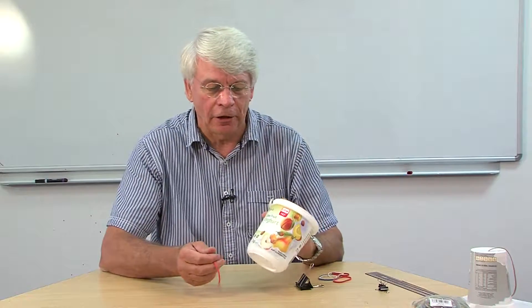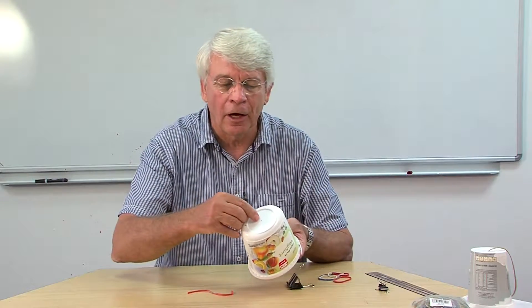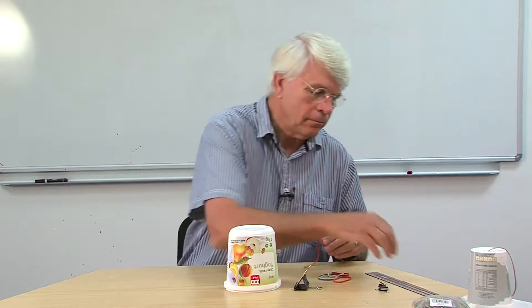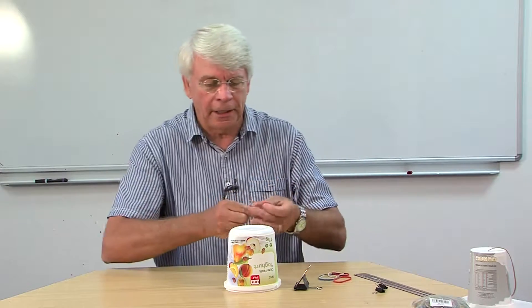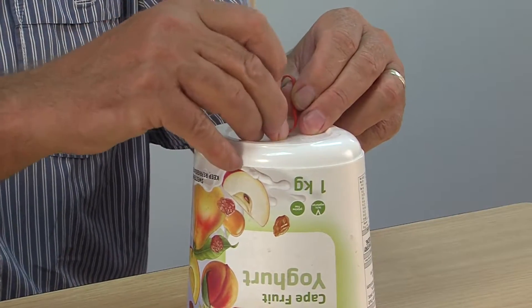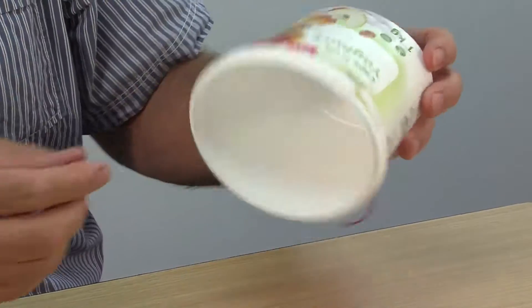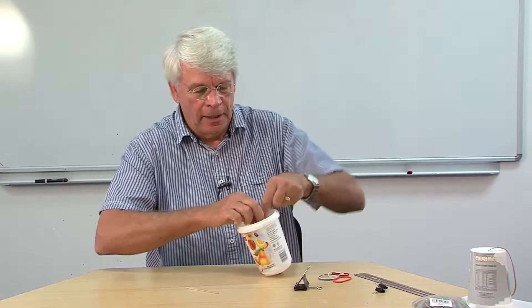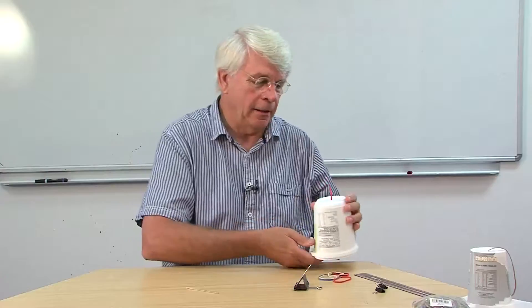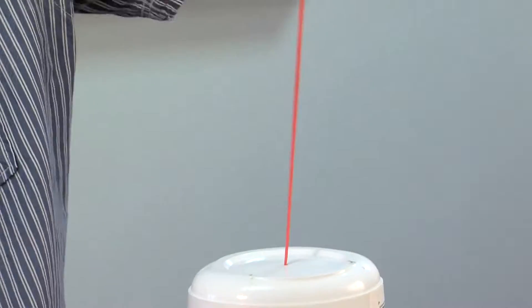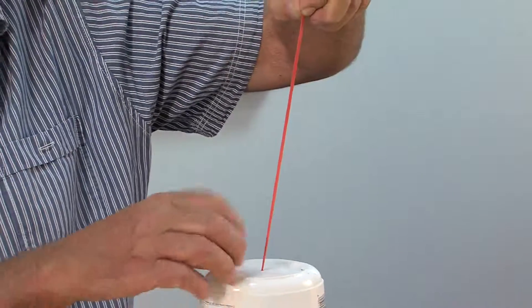If you're demonstrating, something that works quite nicely is to take a yogurt tub, drill a little hole in the bottom, then take a pencil or stick and push the rubber band through, pull it through a little bit, and tie a knot in it. And there you've made a sounding box to amplify the sound.